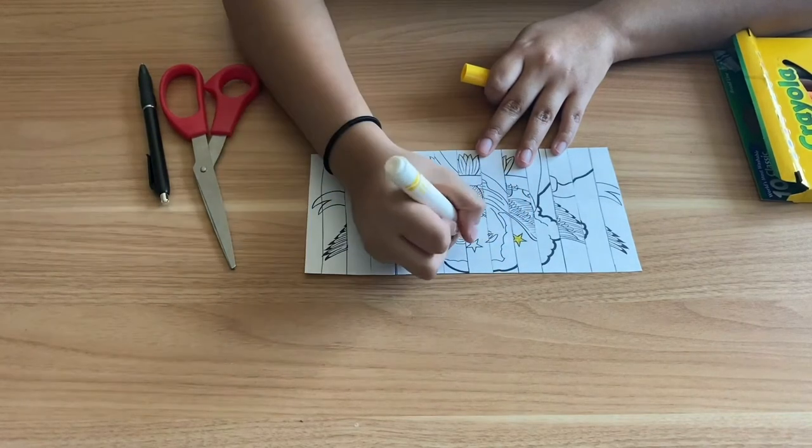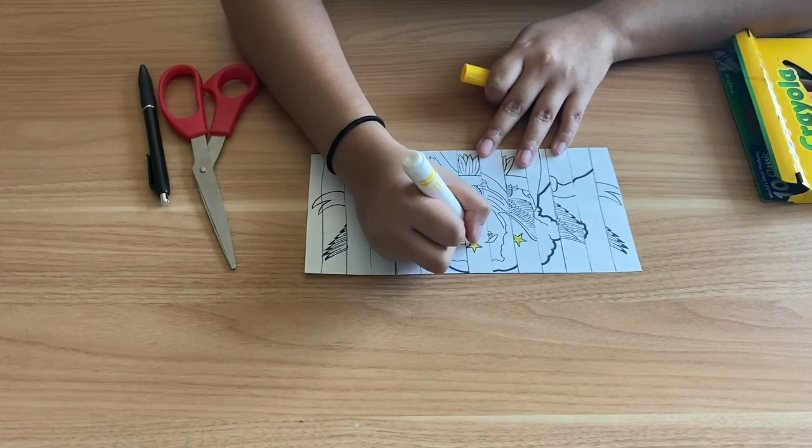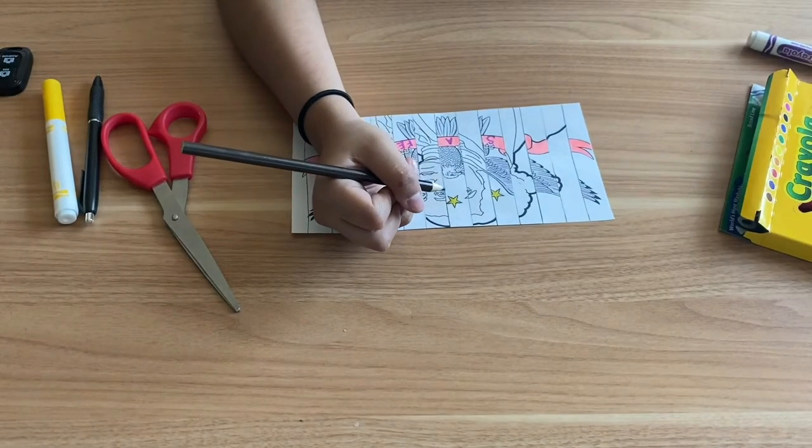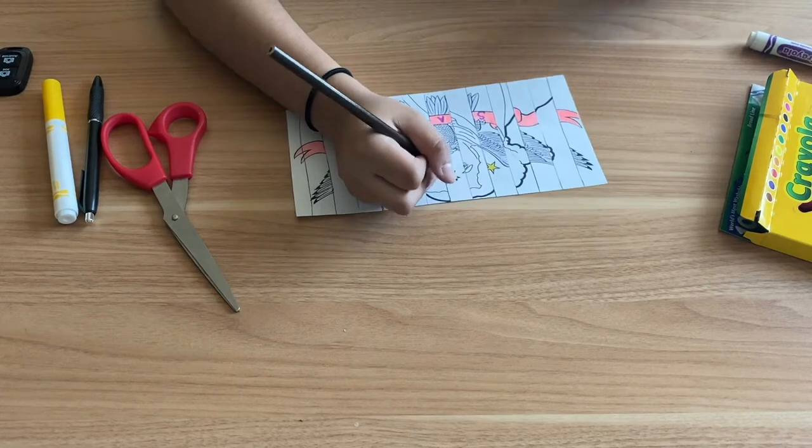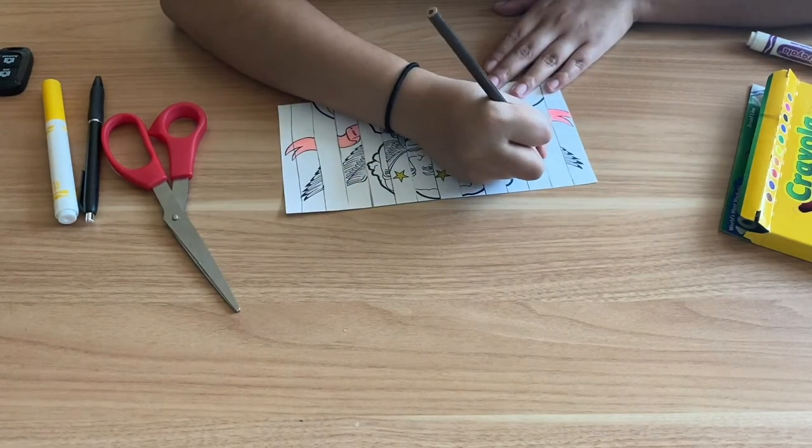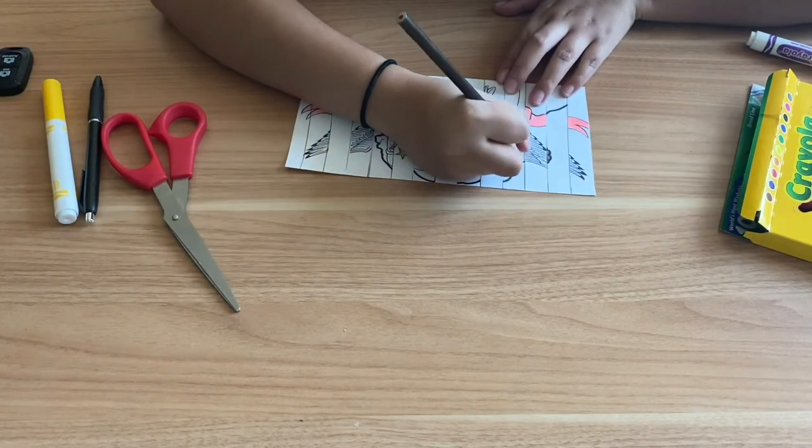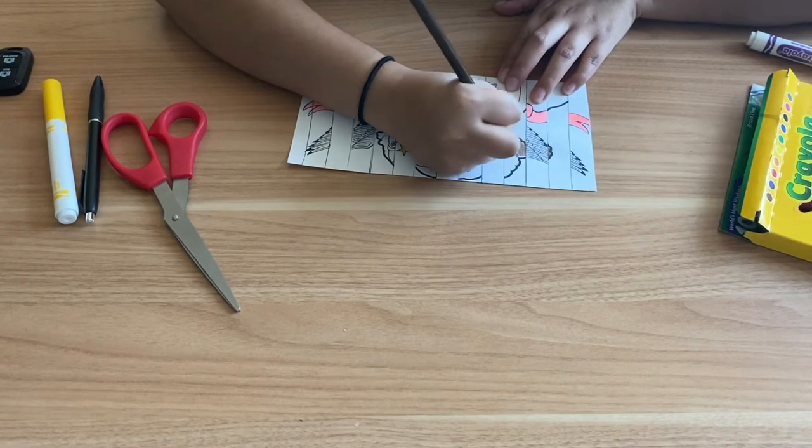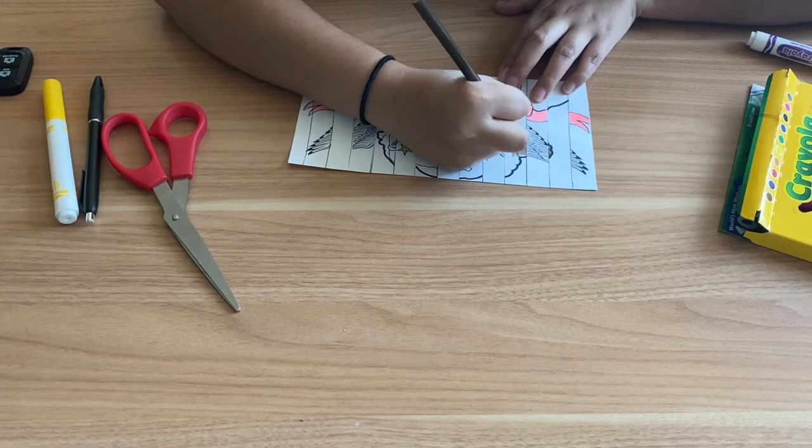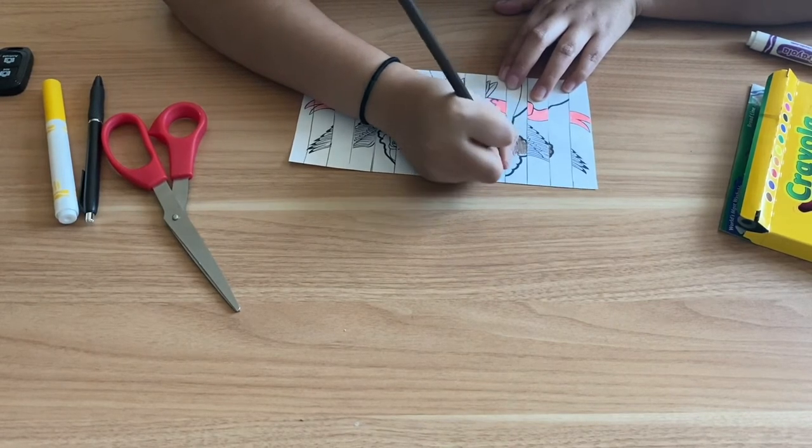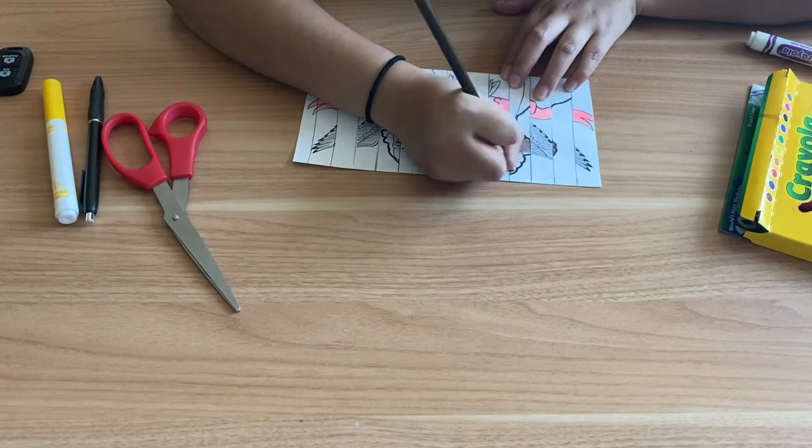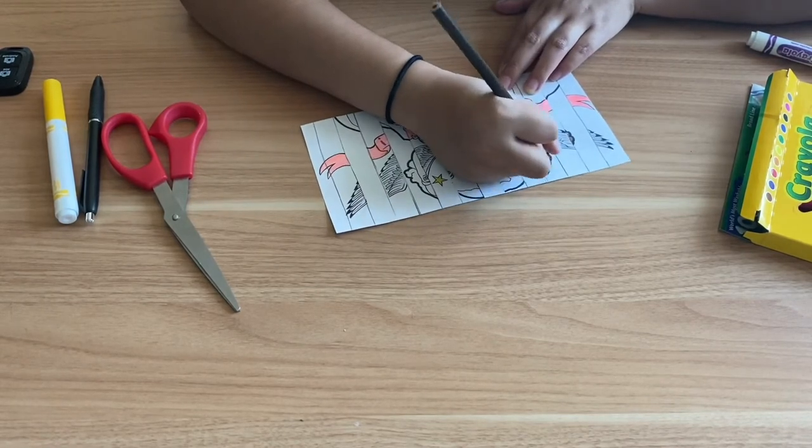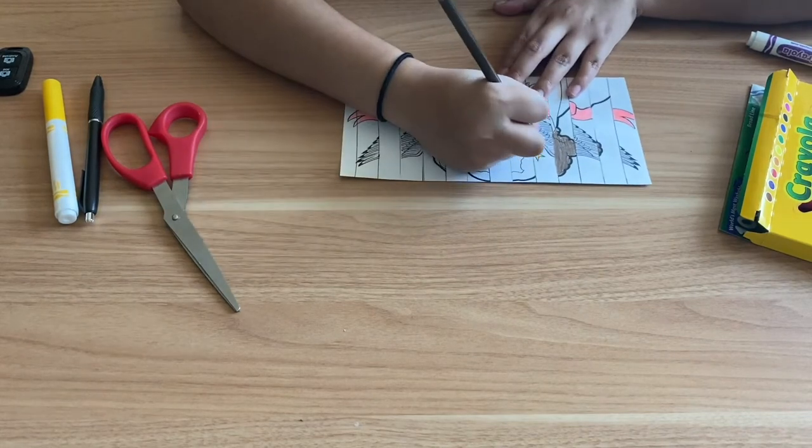While you guys go ahead and start coloring in your handout that you were given, I'm going to go ahead and tell you some fun facts or some facts about George Washington as a little refresher. So, the first fact about George Washington and the most obvious one is that he was our first president of the United States. His term started on April 30th, 1789, and it ended March 4th, 1797, with his vice president, John Adams.